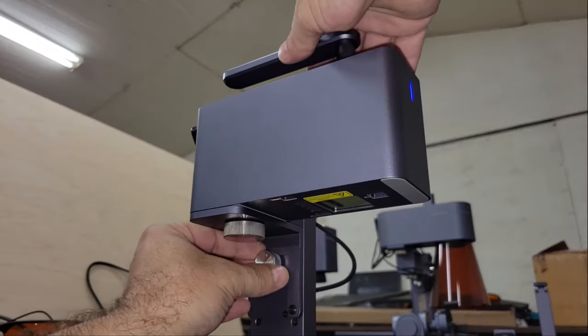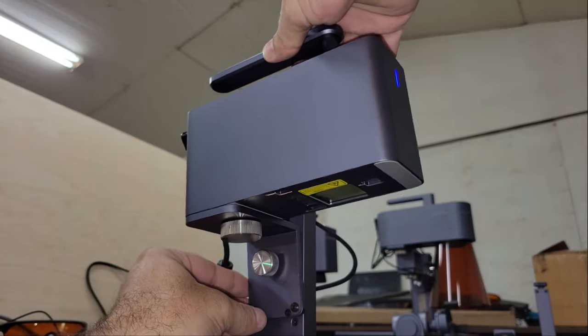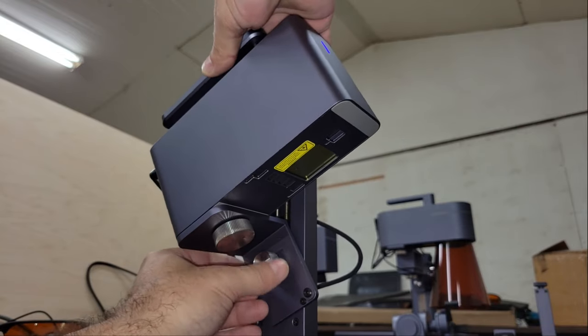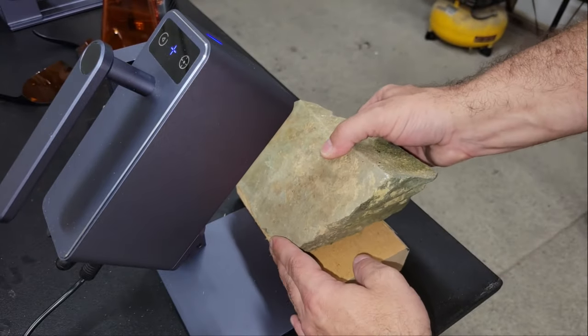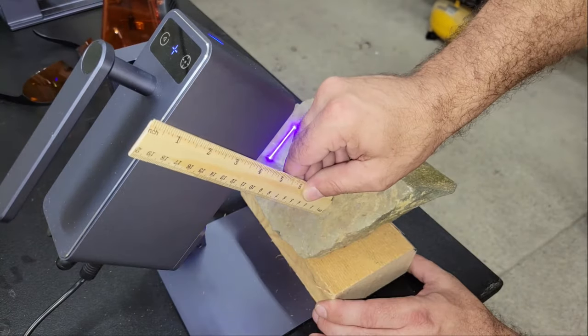However, it can etch any painted metals. This engraver can also be used for engraving objects at an angle by loosening the thumb screw on the side of the electric stand and adjusting the angle of the mounting bracket to match the angle of the workpiece.